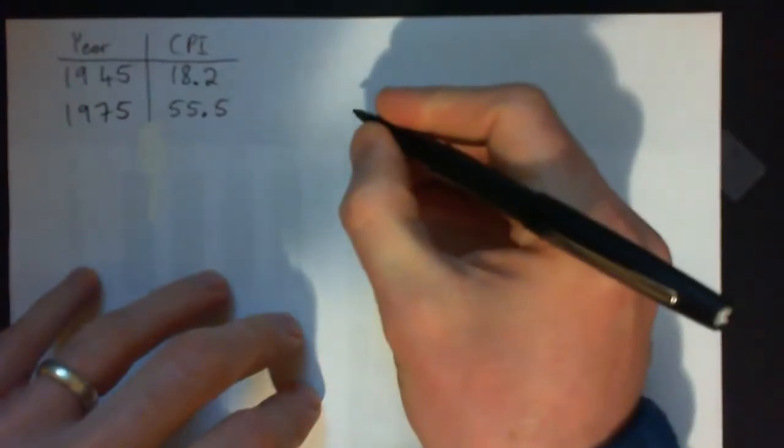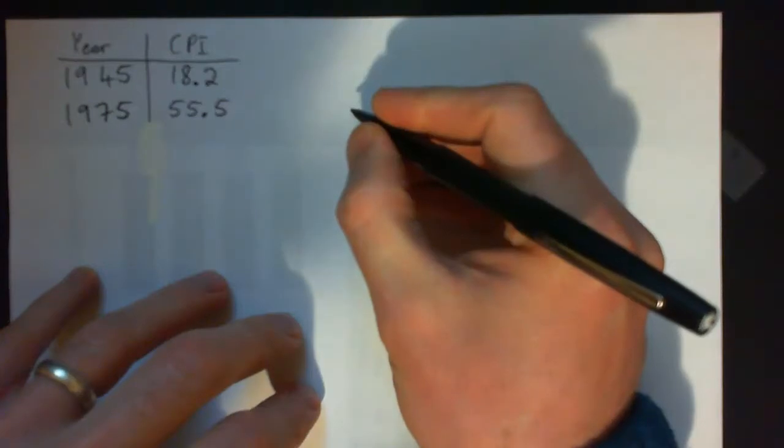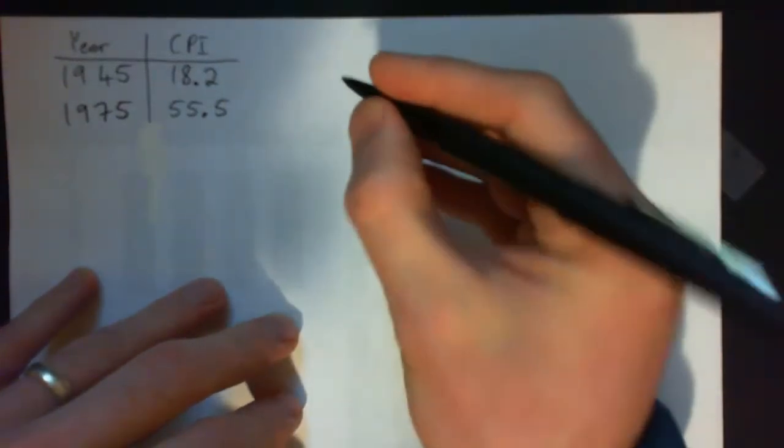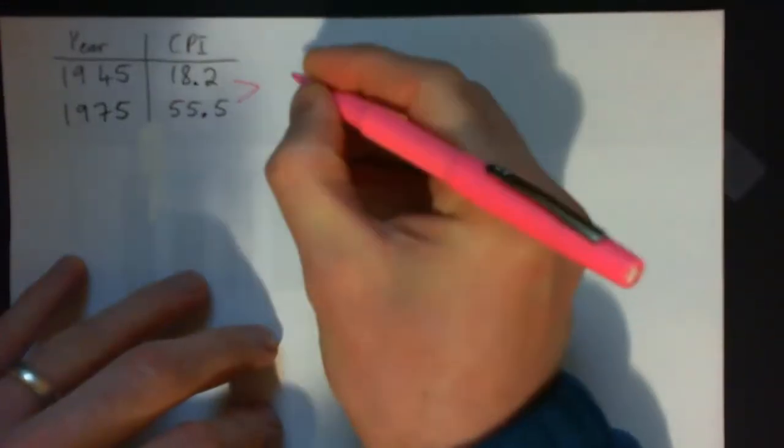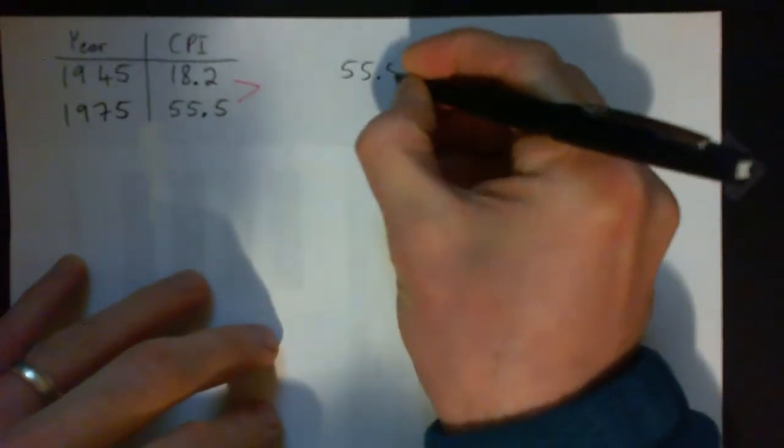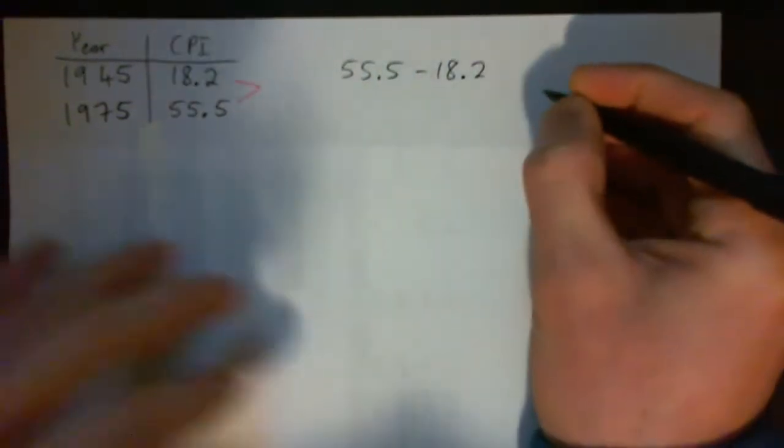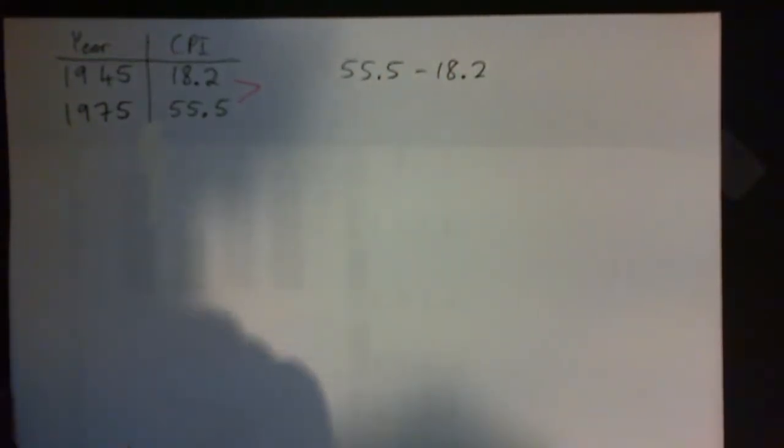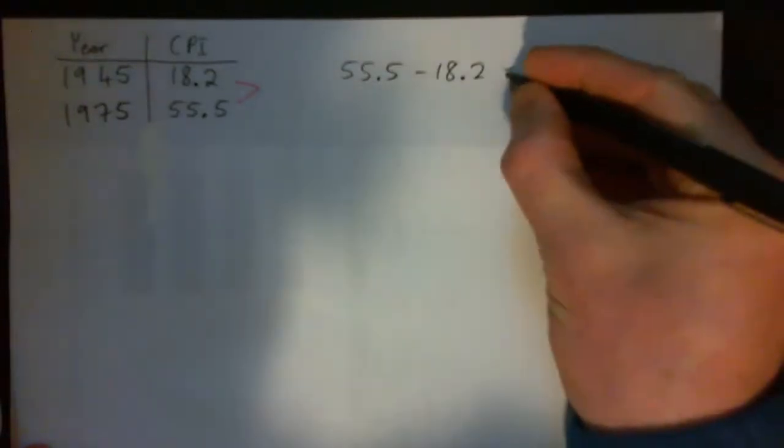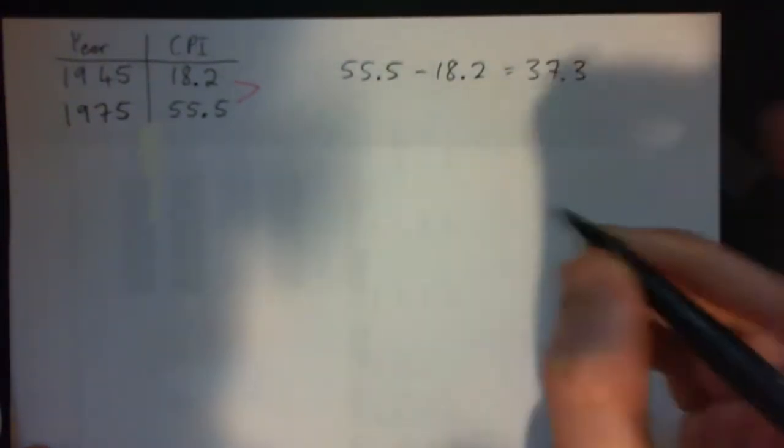We're going to get the 30-year inflation rate. To get an inflation rate, you've got to get the percent change or the percent increase. First of all, we figure out what's the actual increase. So you go 55.5 subtract 18.2, and that gives us 37.3.